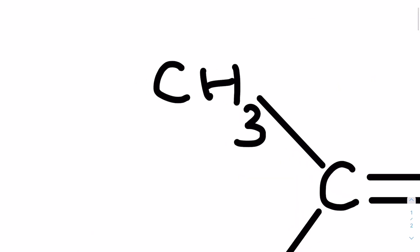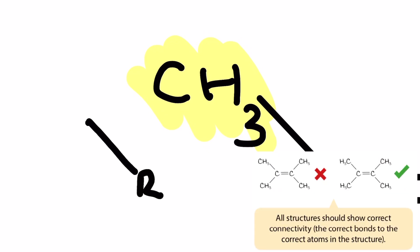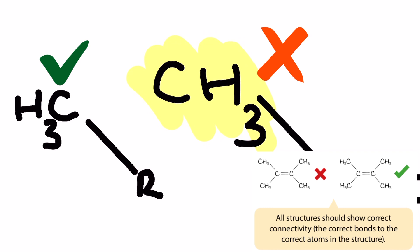Over here on the left hand side of our molecule, everything might seem okay at first, but actually what we've got an issue with here is bond connectivity. The examiner comment summary points out that all structures should show correct connectivity with the correct bonds to the correct atoms in the structure, and so here we need to maintain carbon to carbon connection even on a CH3 group.